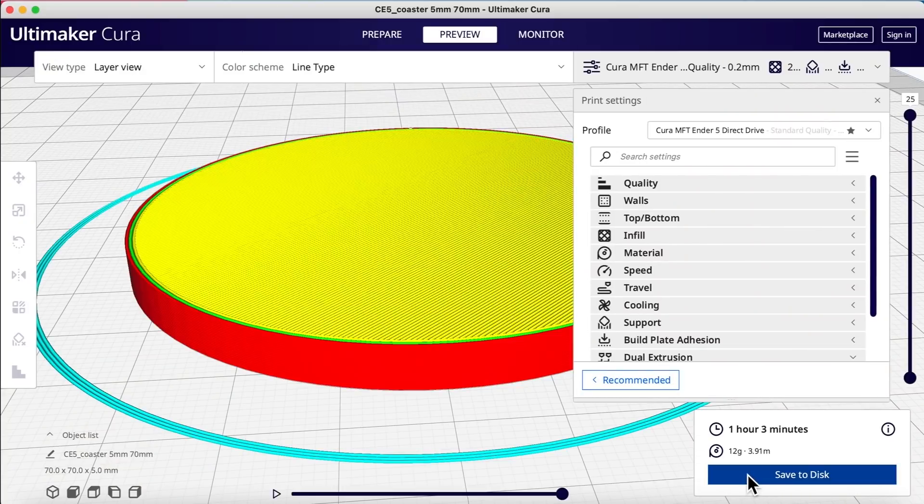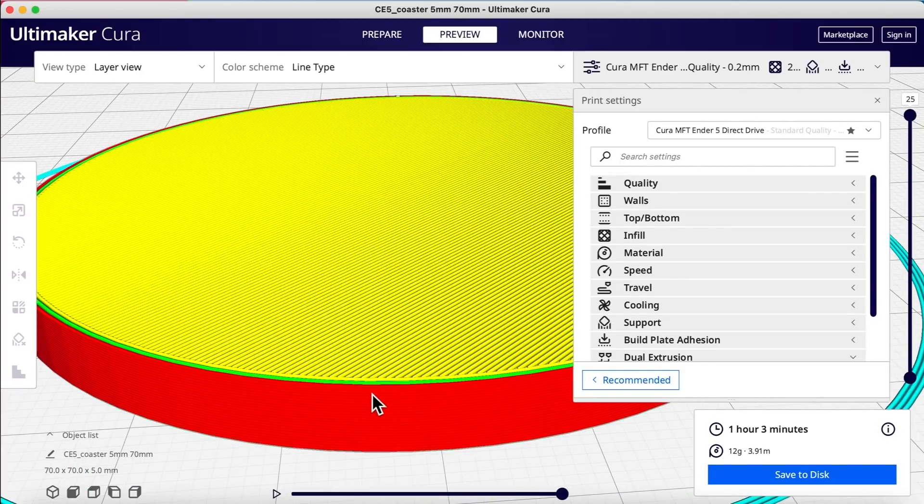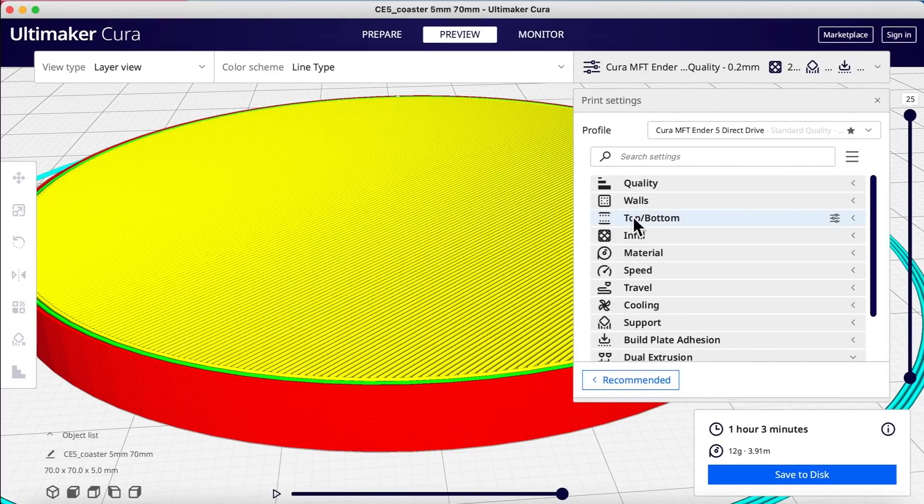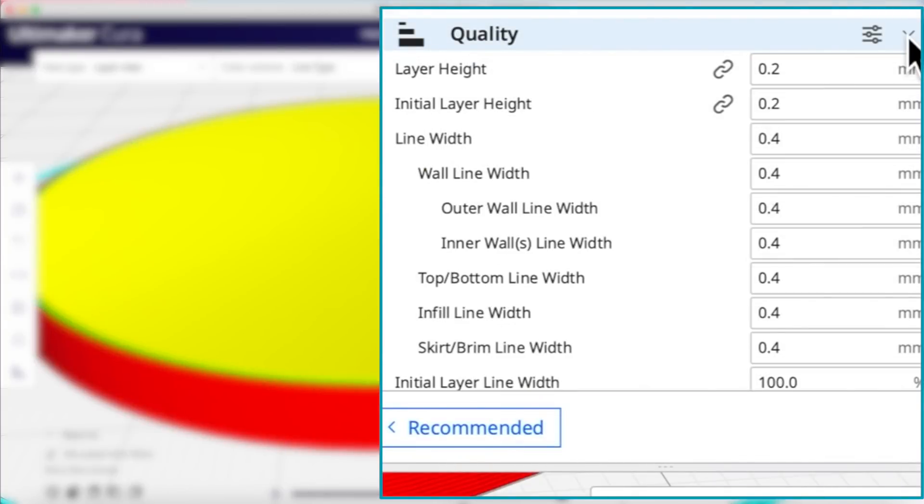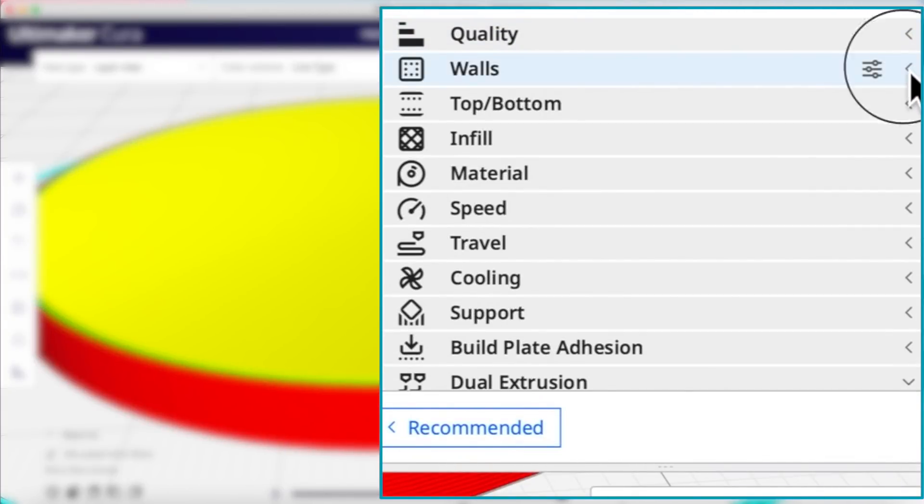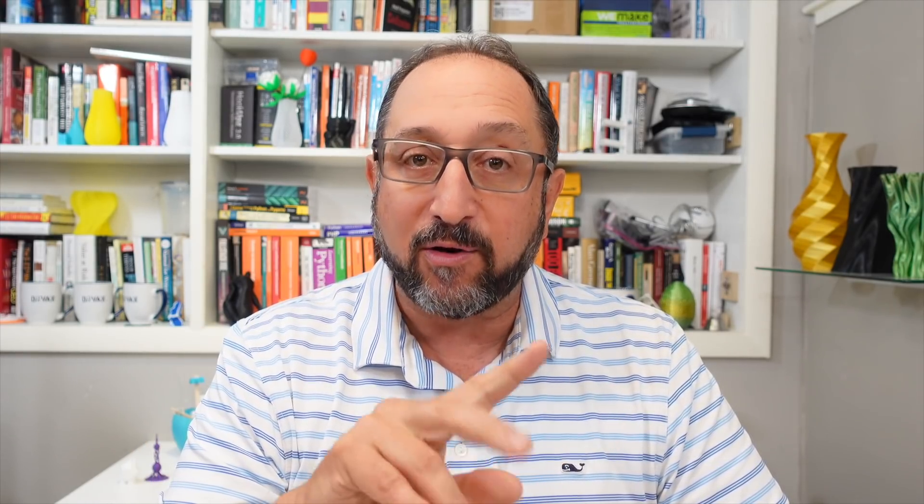You can see here if we zoom in, we have a red outer wall, a green inner wall, and then a top layer. Now, why is it configured like that? Well, if we go to quality, we'll see that our line width is 0.4 millimeters. We go to walls. We'll see our wall width is 0.8 millimeters. That gives us two walls. There is only one outer wall, and then the other walls are inner walls. So with two walls, we have one outer wall, one inner wall, and then a top layer.